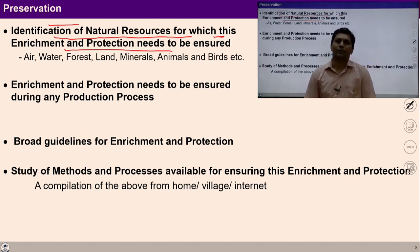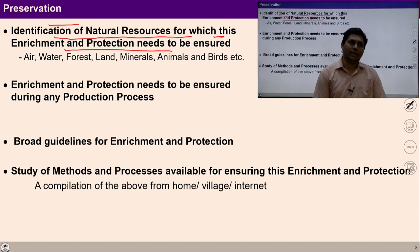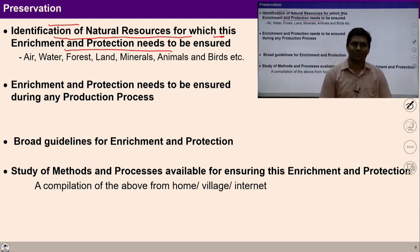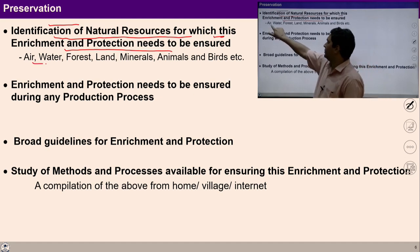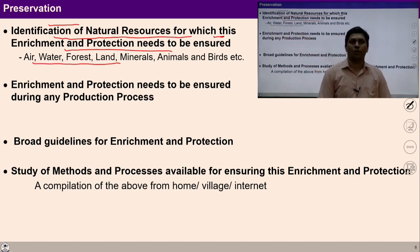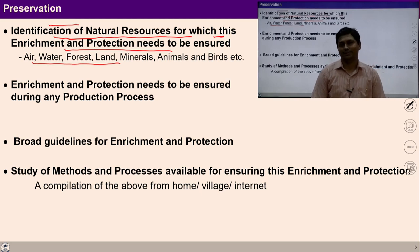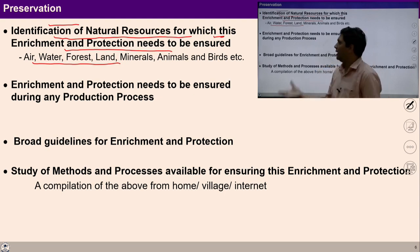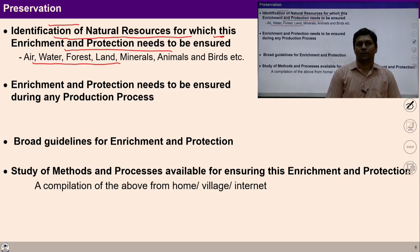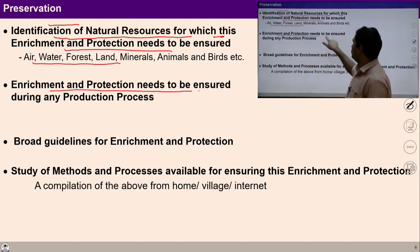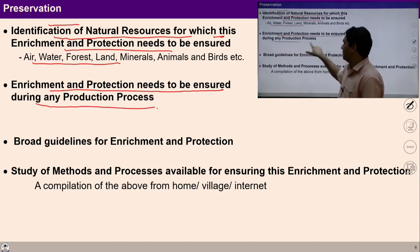We will then talk about enrichment and protection of those natural resources — for example, air, water, forest, land, minerals, animals, birds, etc. These are natural resources which are required for a fulfilling life. Similarly, enrichment and protection needs to be ensured during any production process, so whatever is produced needs to be enriched and protected for the smooth running of the system.